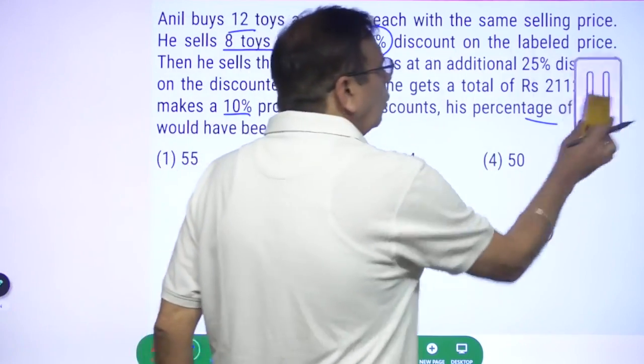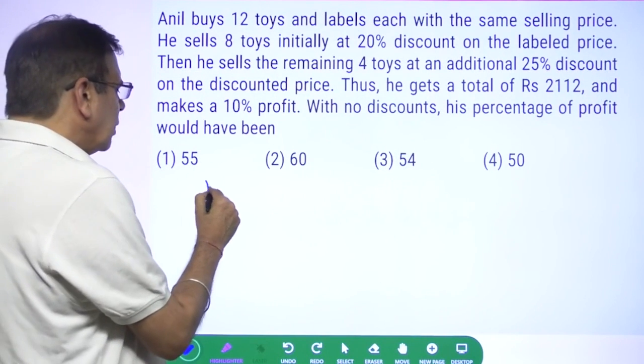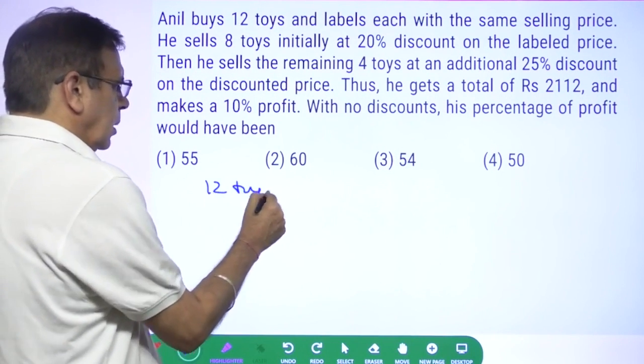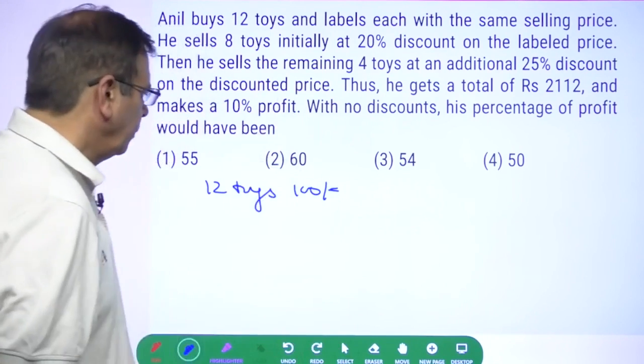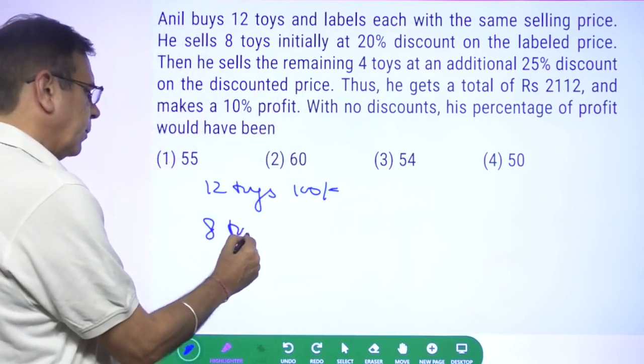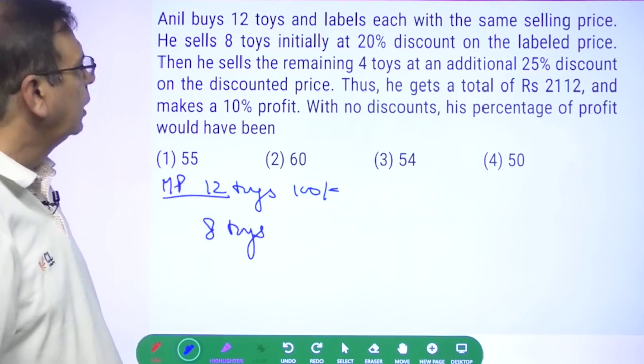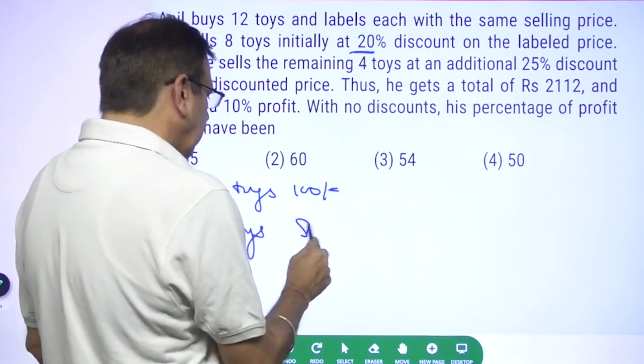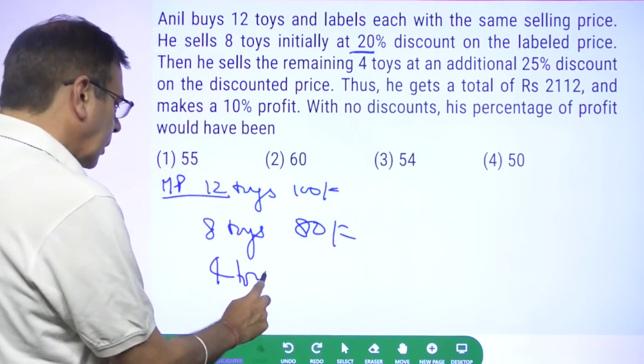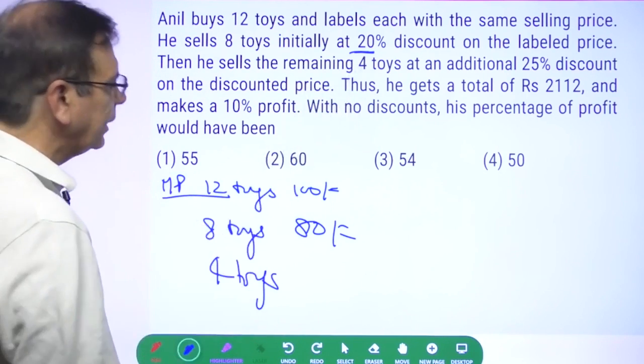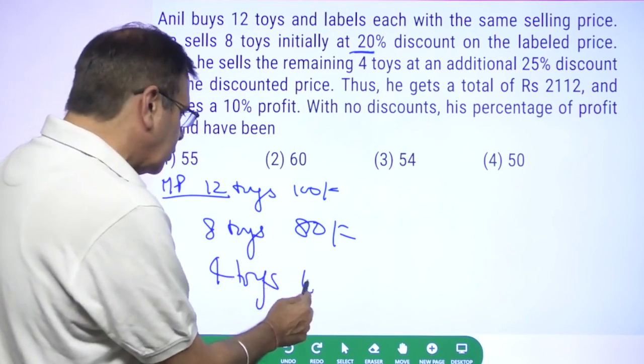Let me show you how you should be doing this question without worrying about this. Let me assume all these 12 toys each is Rs100. This is the mark price. The first 8 toys he will sell at a discount of 20%, so Rs80. The next 4 toys he will sell at an additional discount of 25%. 25% of 80 is 20, so he will sell it at Rs60 each.